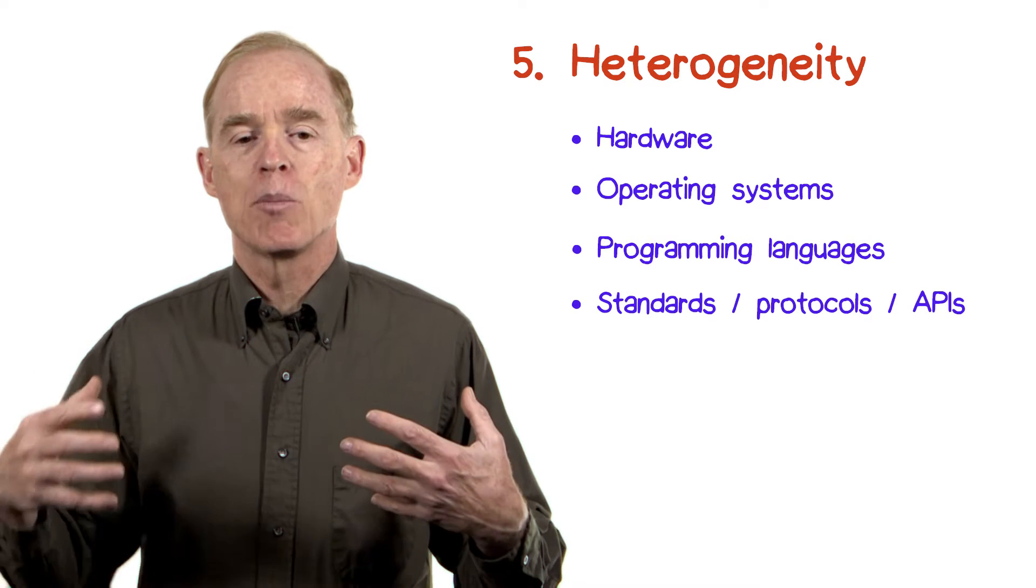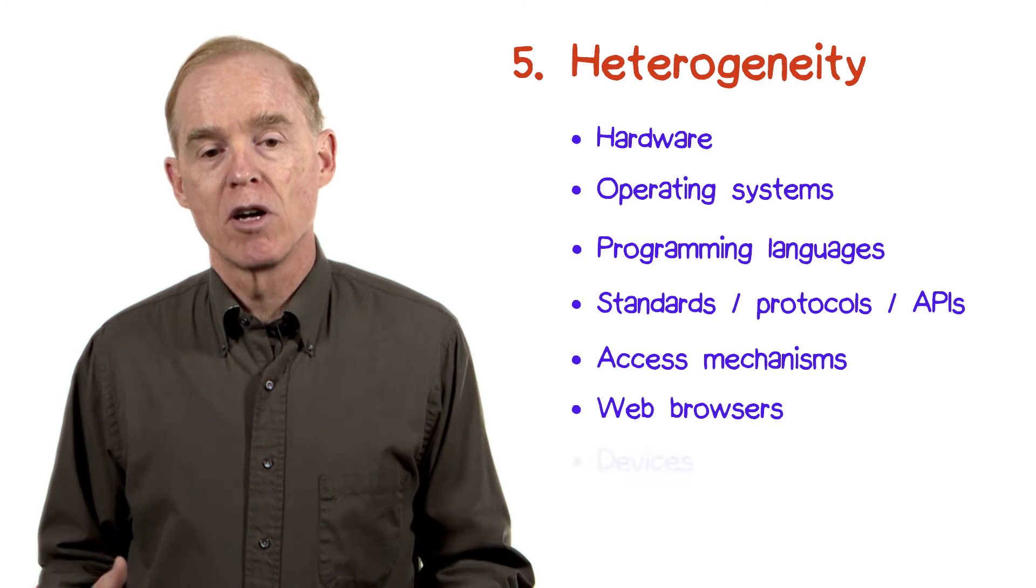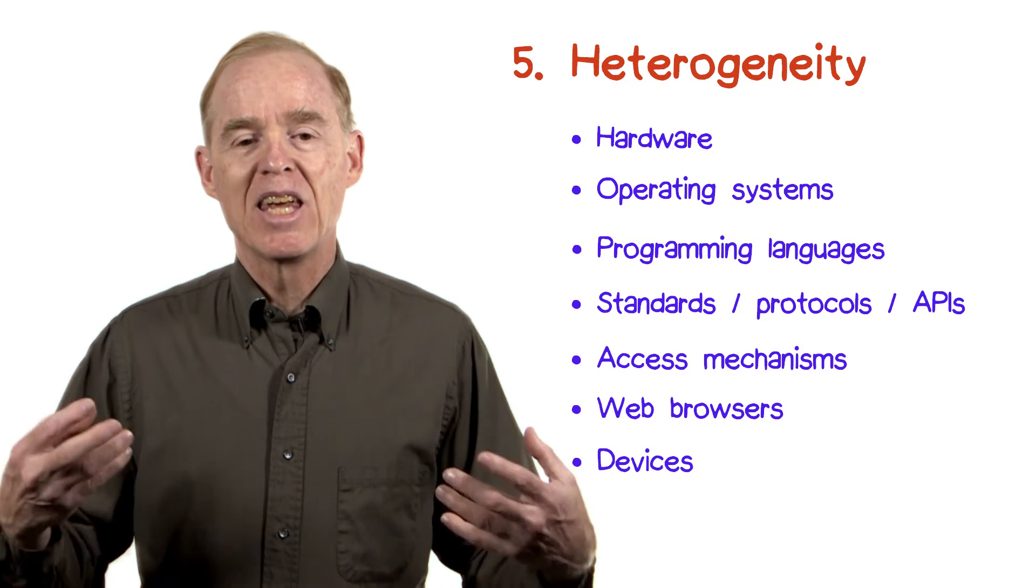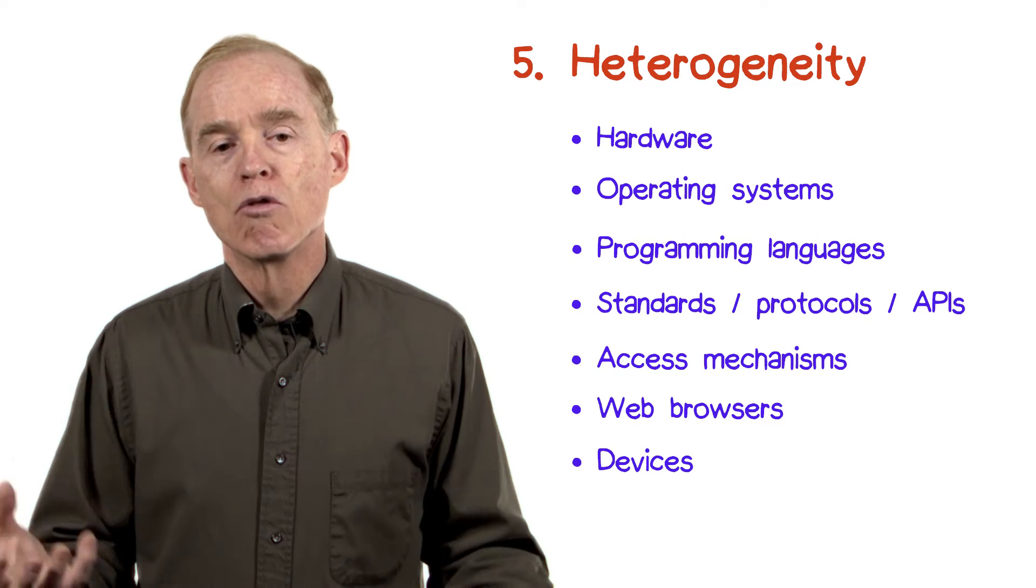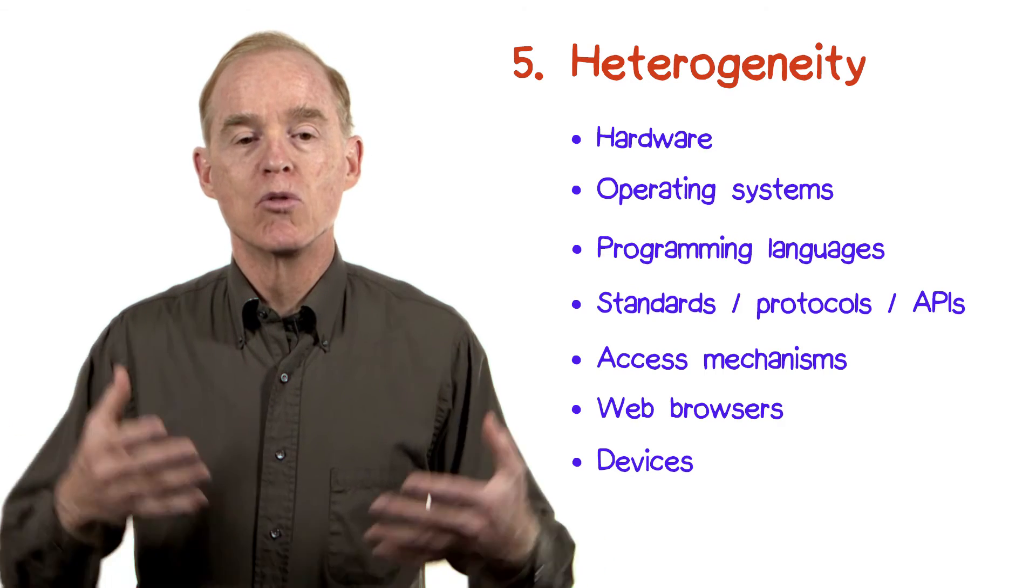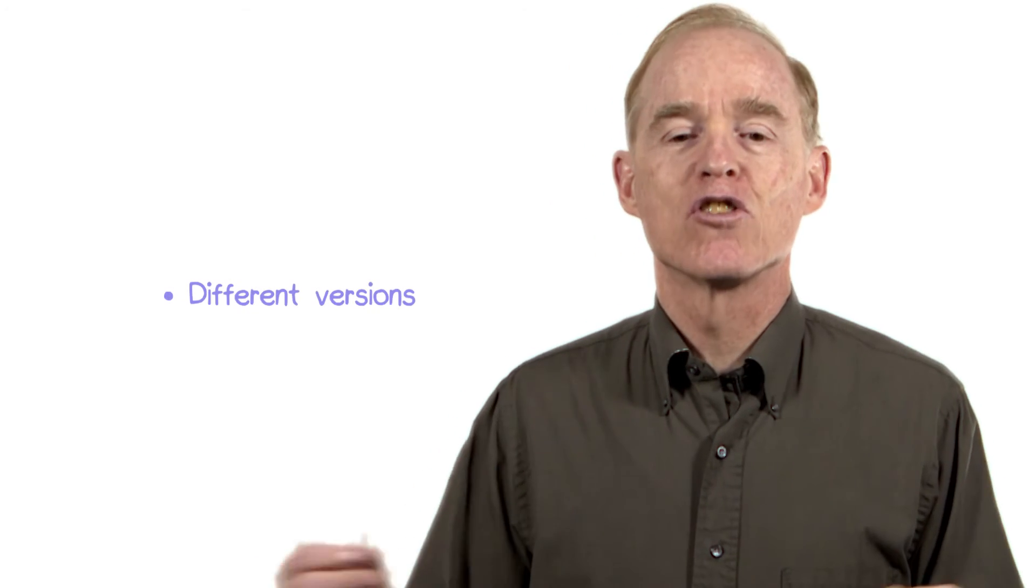The pieces of the application that provide access, such as web browsers or these devices, all of these can change. Moreover, even if they don't change, even if they're uniformly applied—that is, every part of the system uses Linux or every part uses Ruby—are they using the same version?